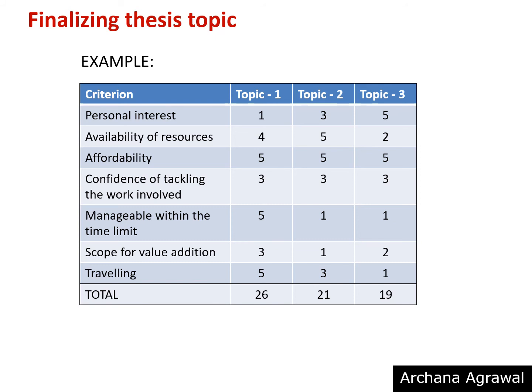Like this, you rate against all the criteria. You may even add a criterion of traveling — for example, you want to avoid traveling due to the pandemic. So you give the least rating to topic number 3, which involves extensive travel, and the maximum rating to topic number 1, which requires minimum travel and that too locally. After adding all the ratings, you find that topic number 3, in which you had the maximum interest, is the least workable topic. This way, you are forewarned about the hurdles that lay ahead and you won't be stranded midway.